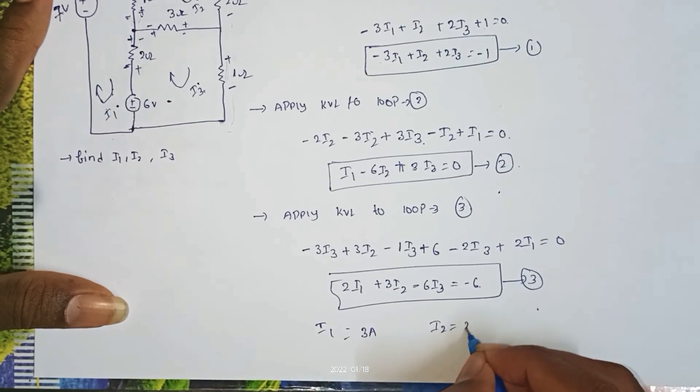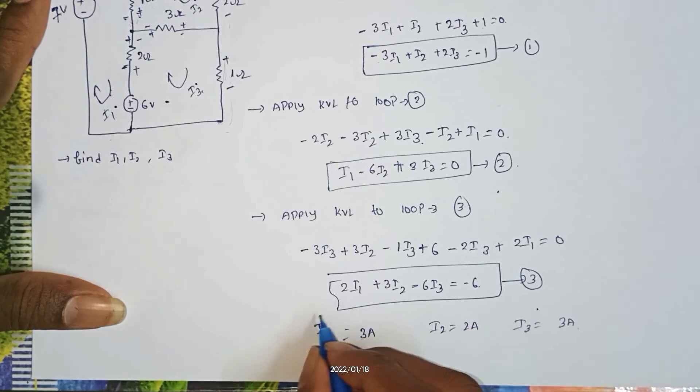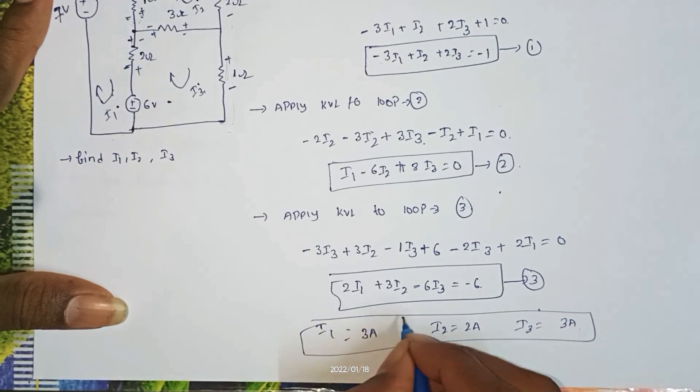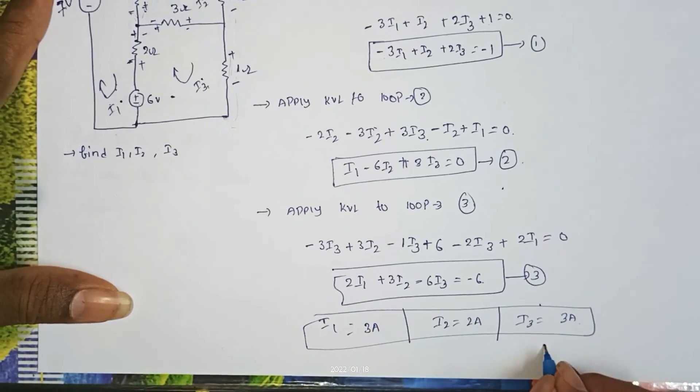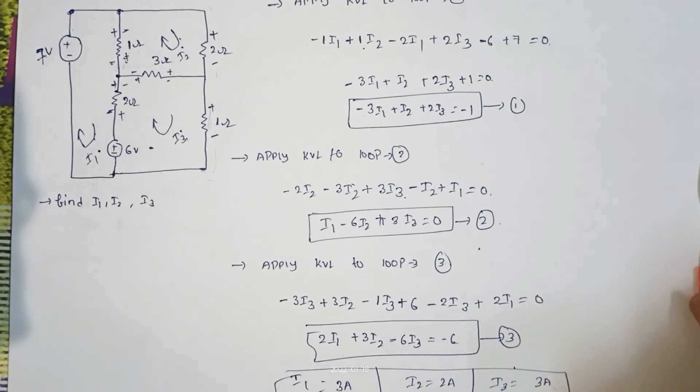We get I1 equal to 3 amps, I2 equal to 2 amps, I3 equal to 3 amps. This is I1, I2, and I3.